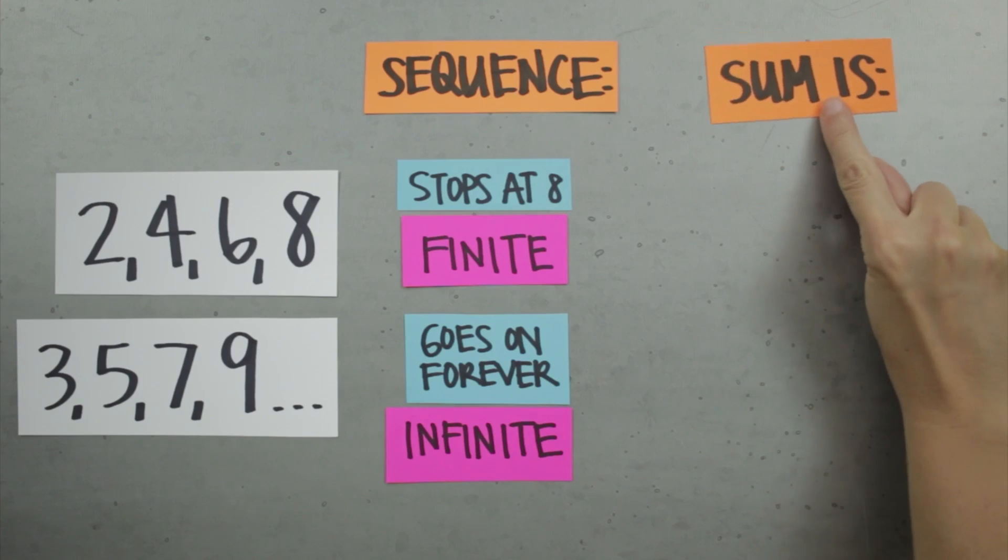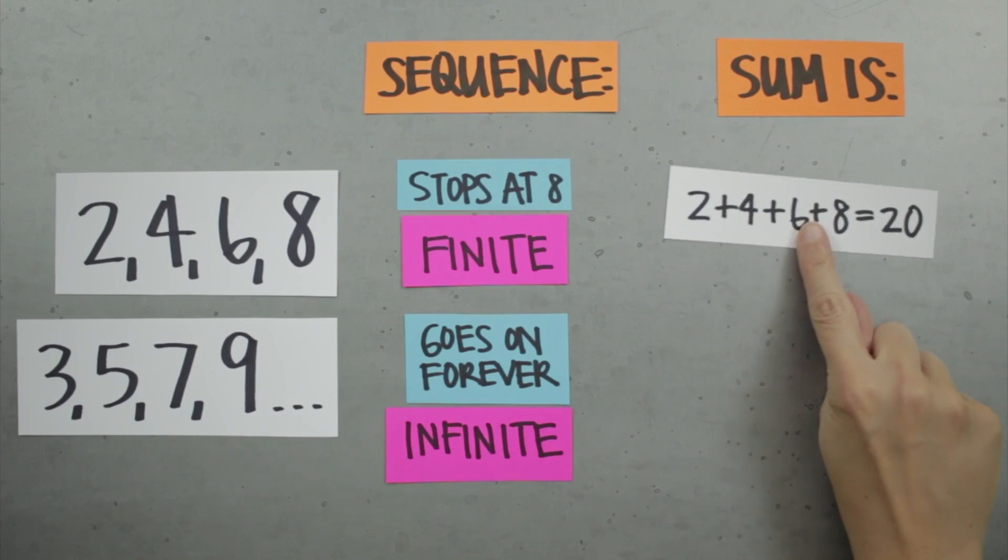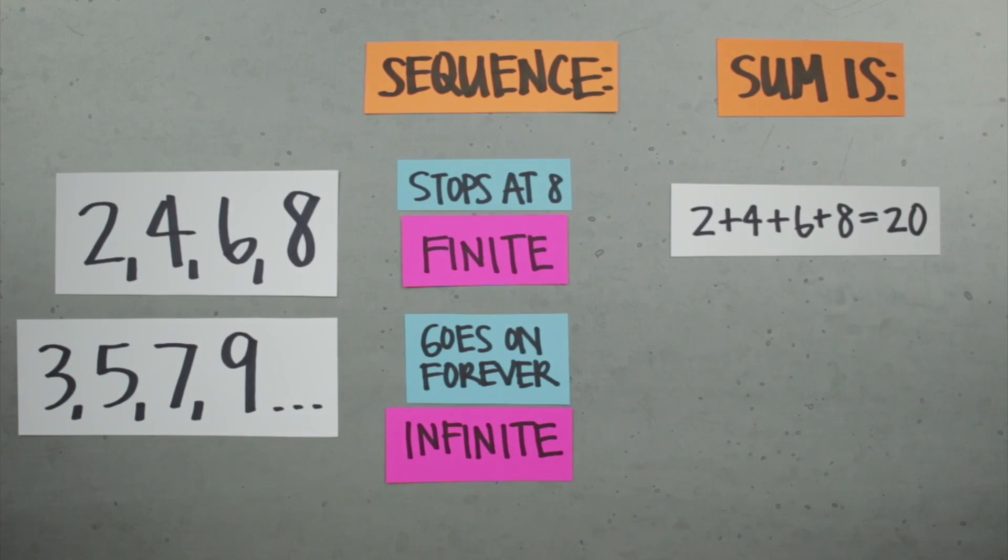If we want to find the sum of a finite sequence, then we can just add up the terms. If we want to find the sum of an infinite sequence, we call that sum a series. So the sum of an infinite set of terms is an infinite series.